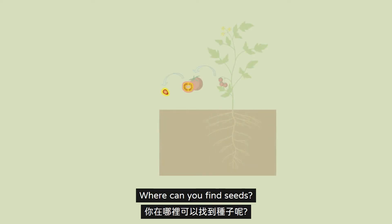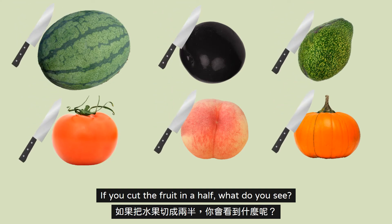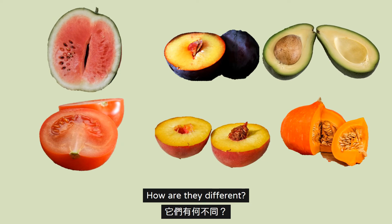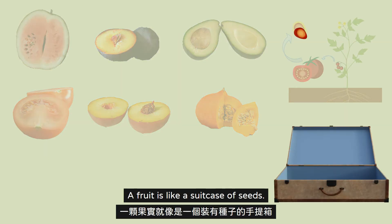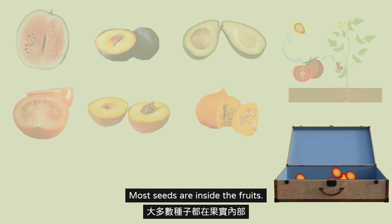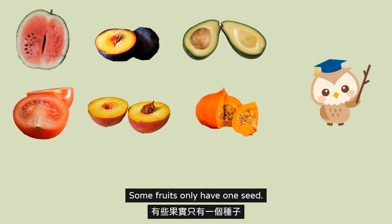Where can you find seeds? If you cut the fruit in half, what do you see? How are they different? A fruit is like a suitcase of seeds. Most seeds are inside the fruits. Some fruits have many seeds, and some fruits only have one seed.